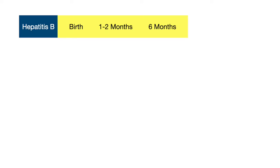Let's start with the hepatitis B vaccine, which is administered at birth while the baby is still in the hospital, and then between one to two months — typically at two months — and then later on at six months.